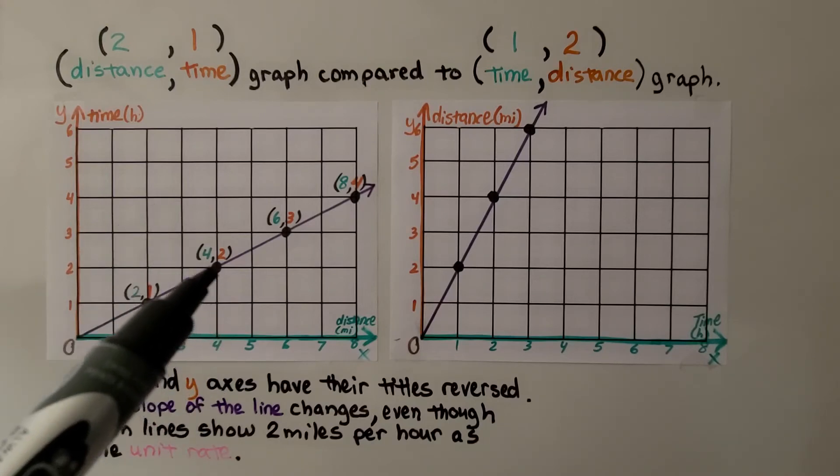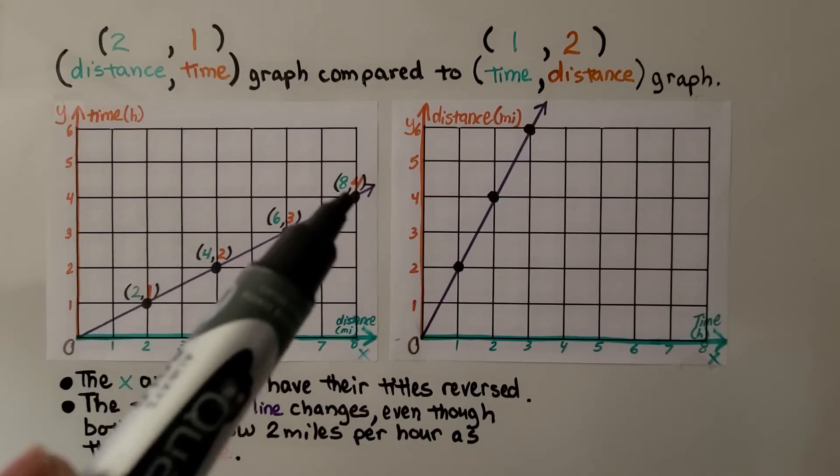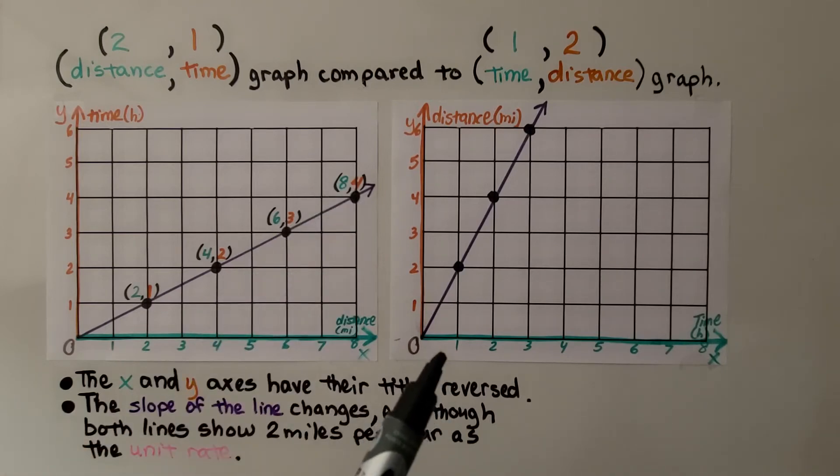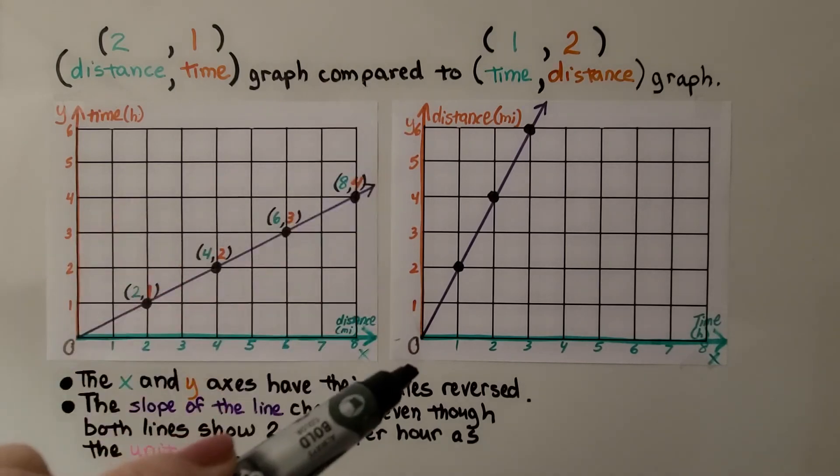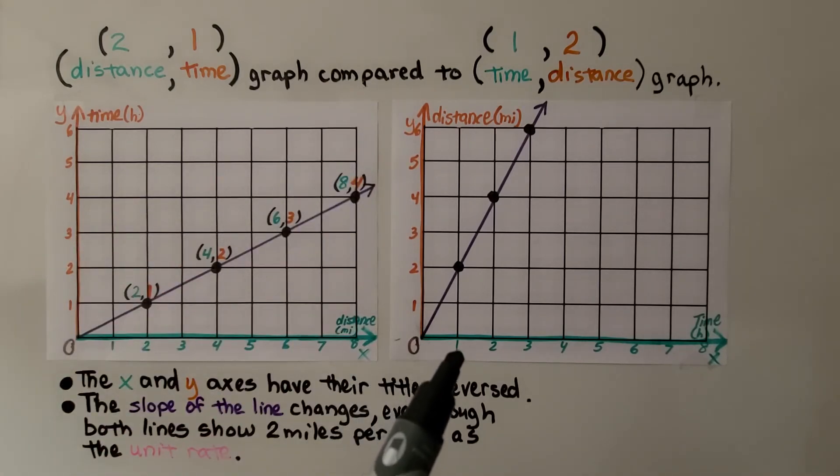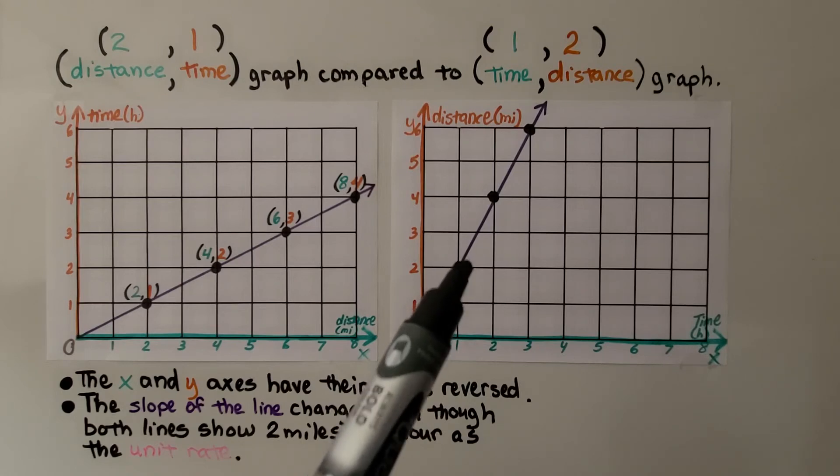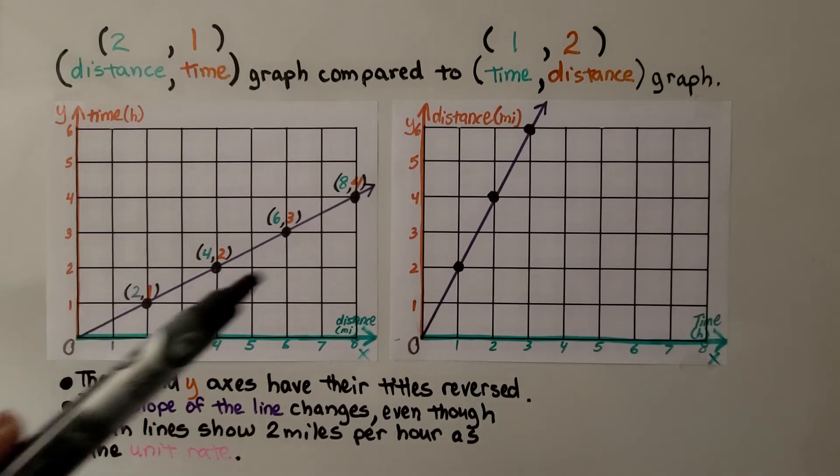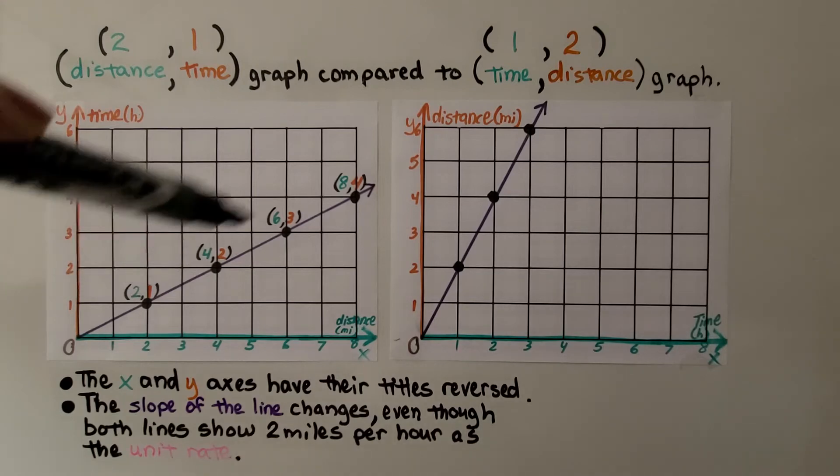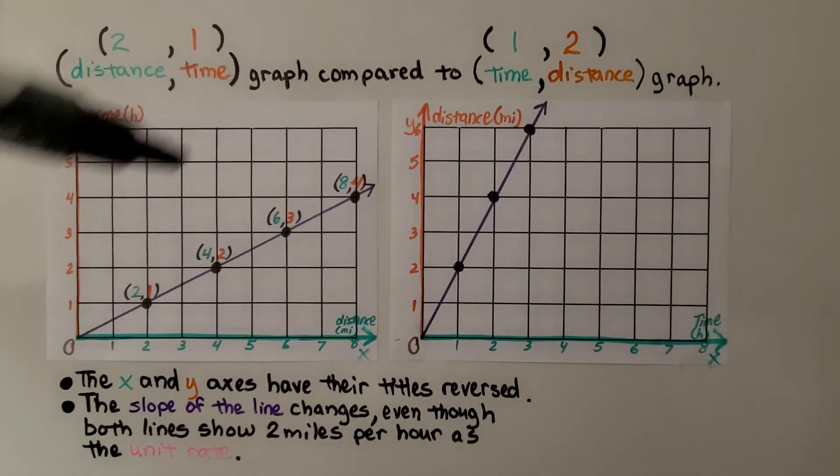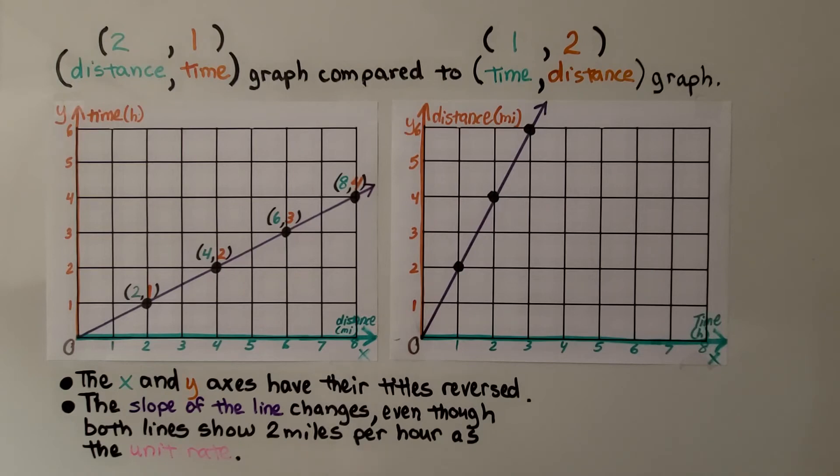We would know that the next one would be a 4 and a 2, then a 6 and a 3, and an 8 and a 4. For this one, we have time as our x value, and we have distance as our y value. In 1 hour, we'd go a distance of 2 miles. So, the x and y axes have their titles reversed. They're both plotted correctly. The points are in the correct place. They just have x and y axes with their titles reversed. Do you notice the slope of the line, how steep it is, changes, even though both lines are showing 2 miles per hour as the unit rate?